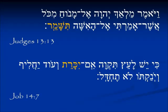In Judges 13:13 we see the form Tishamur. We've already seen that the Pa'al form of that verb would be Tishmor, so we know we're not looking at a Pa'al form here. The extra syllable is an indication — this is a Nifal form. The wife, Isha, she will be guarded. In Job 14:7 here's a similar form, Yikaret. Karat means 'to cut,' but he is not cutting something — the thing is being cut. It's a passive form. Remember, the Nifal is a passive form.